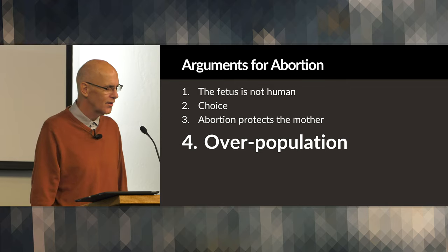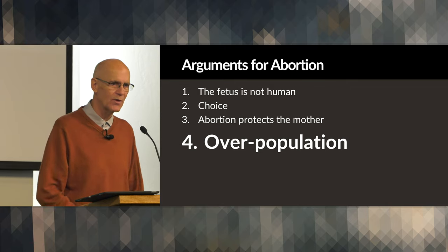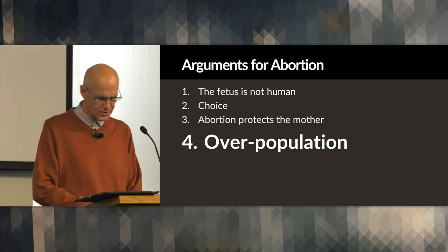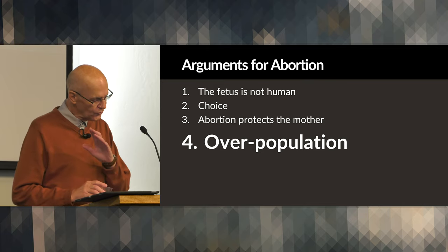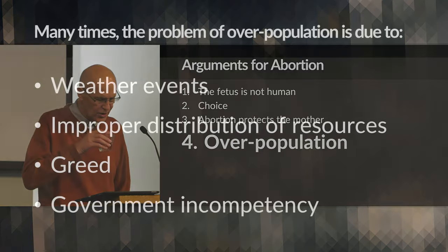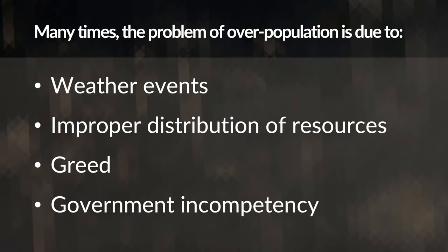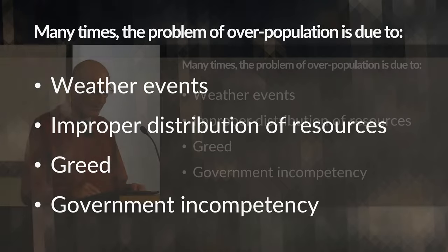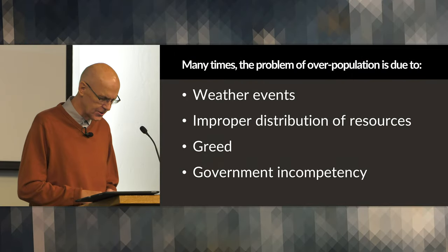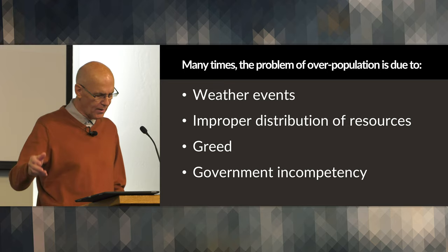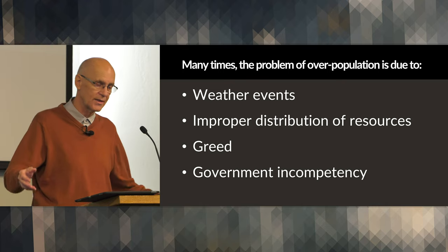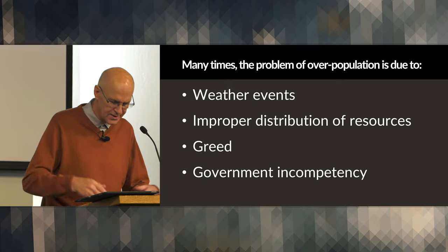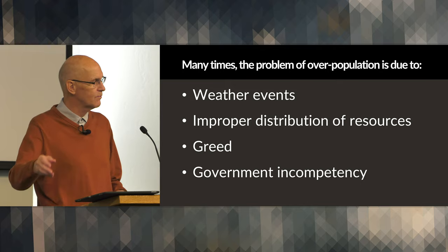One argument is overpopulation. You don't hear this one very much, but it used to be a pretty popular argument — that abortion is necessary because the world is rapidly becoming overpopulated. Again, partial truths mixed in with the lie to push the abortion agenda. We know that there are parts of the world that are overcrowded and struggling to have food and water, but their problem is not overpopulation — their problem is improper distribution of resources.